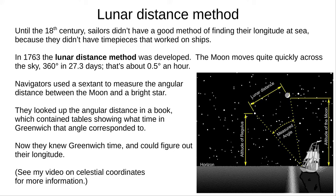Then, in 1763, the lunar distance method was developed. As the Moon orbits the Earth, it moves across the sky relatively quickly, at about half a degree per hour. Navigators would use a sextant, to measure the angular distance between the Moon, and an easily identifiable bright star. Regulus was a popular choice.